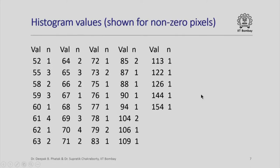We had also seen the histogram values which result from this image. Pixels which did not exist at some pixel values like 0, 1, 2, 3, 4 were not shown. But this was the list: at pixel value 52 there was 1 pixel, 55 there were 3, 62 there was 1, 68 there were 5, 69 there were 3, and so on.